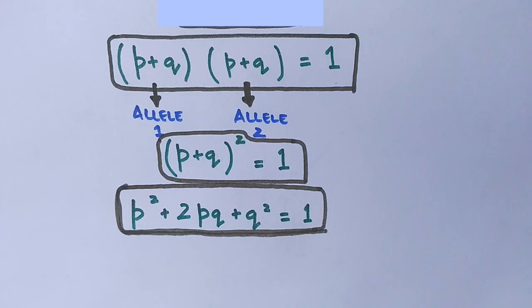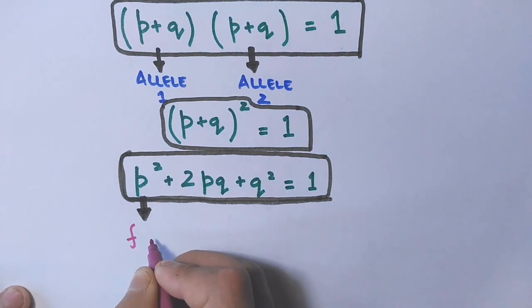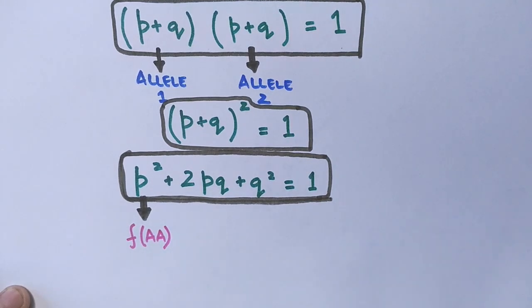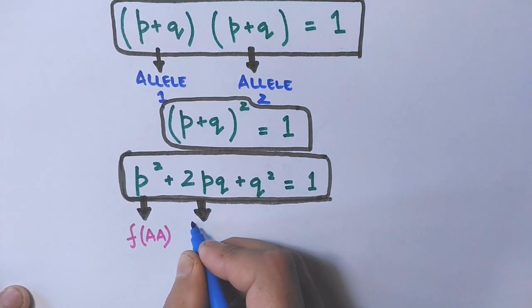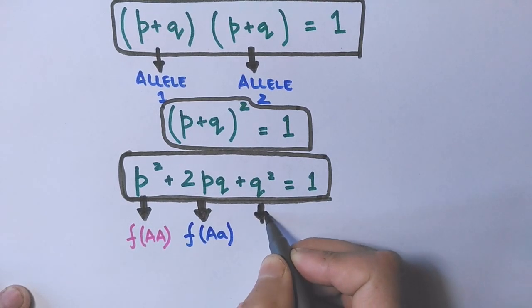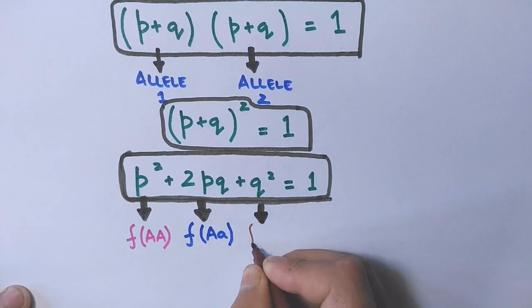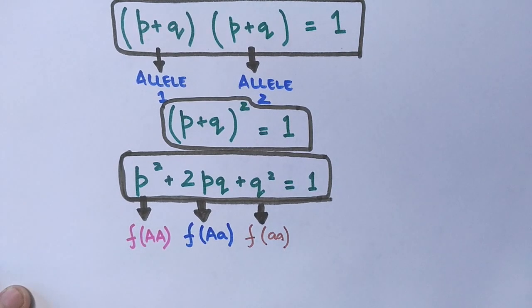Now what do P², Q, and 2PQ denote? P² is the frequency of homozygous dominant genotype, that's AA. 2PQ is the frequency of heterozygous genotype, that's uppercase A and lowercase a. And Q² is the frequency of homozygous recessive genotype aa, both in lowercase.